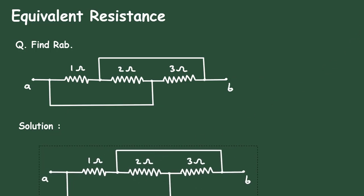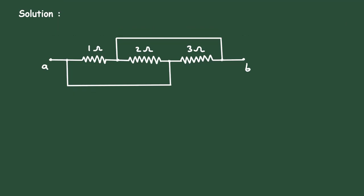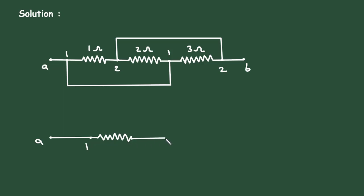First we will copy this circuit, then simplify it. Let us say this is node 1 — this and this are the same, so it is also node 1. Let us say this is node 2, so this will also be 2. Now let us draw terminal A, then node 1 here. Between node 1 and node 2 there is a resistance of 1 ohm, so let us draw that resistance. This is node 1, this is node 2, and the resistance value is 1 ohm.